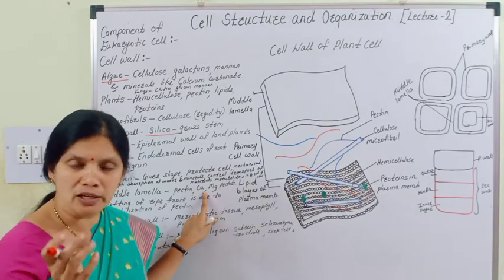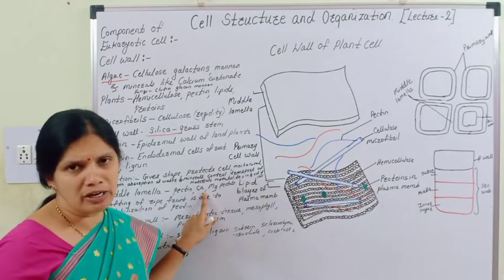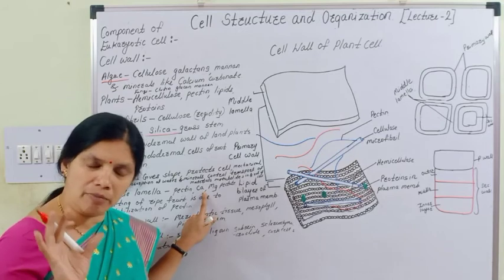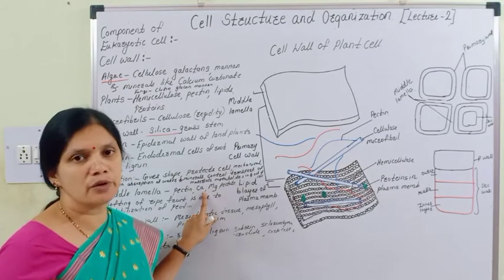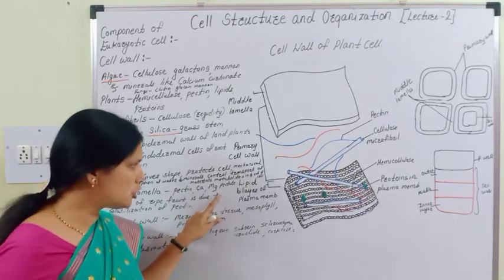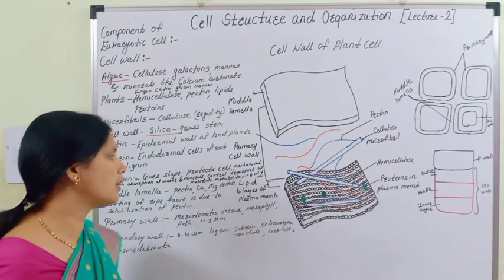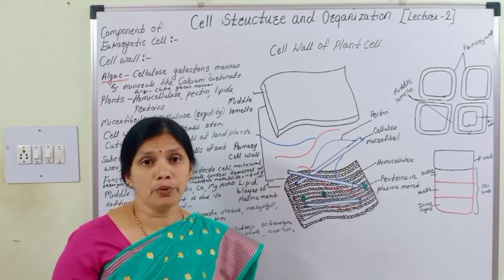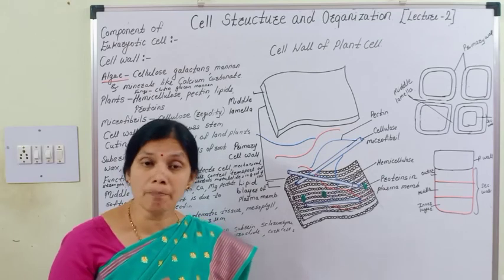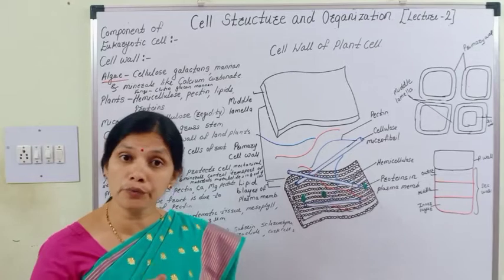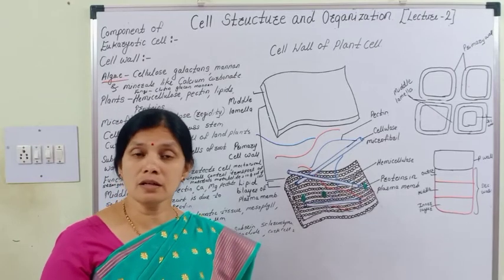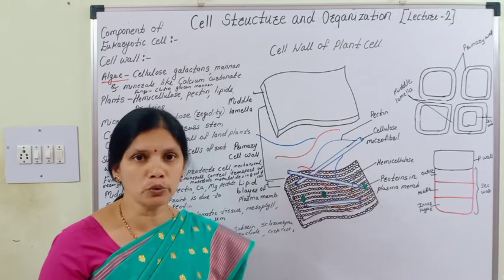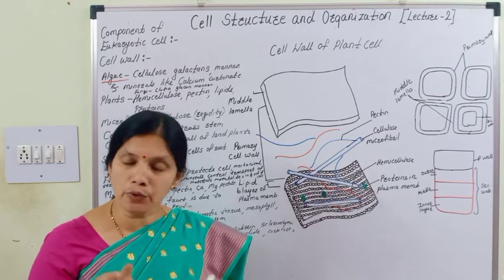The middle lamella is a thin layer of a gel-like substance. Due to this thin middle lamella, adjacent cells are connected to each other. This middle lamella is formed from pectin, calcium pectate, and magnesium pectate. The pectin component is hydrophilic in nature, meaning it has more attraction toward water molecules — it is a water-loving component.